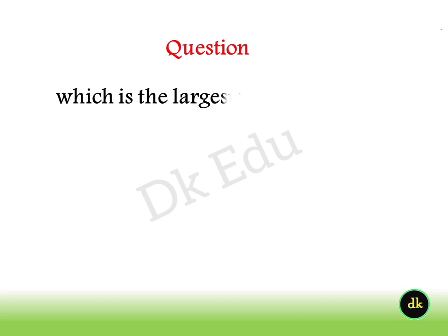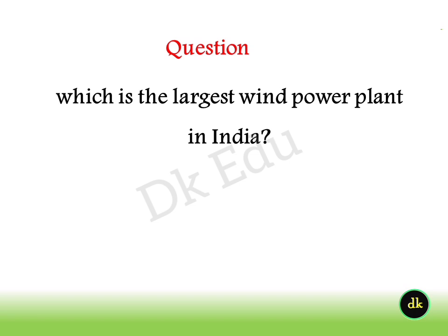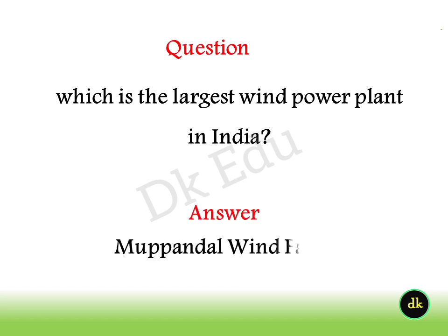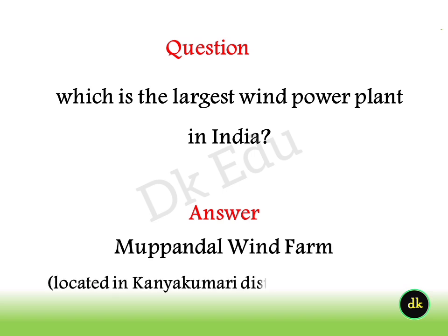Which is the largest wind power plant in India? Answer: Mupandal Wind Farm, located in Kanyakumari district of Tamil Nadu.